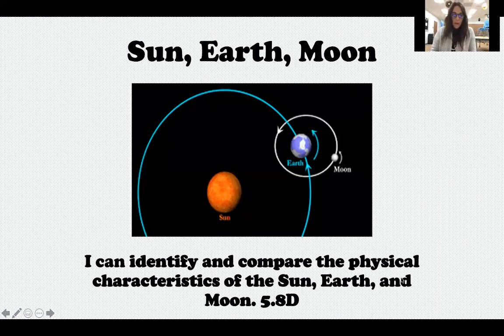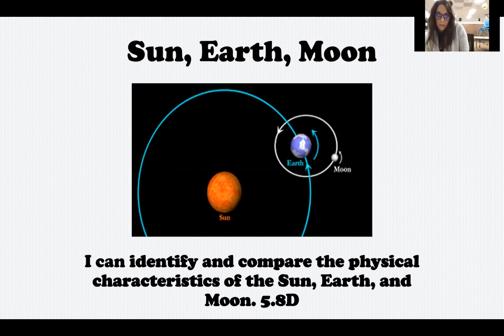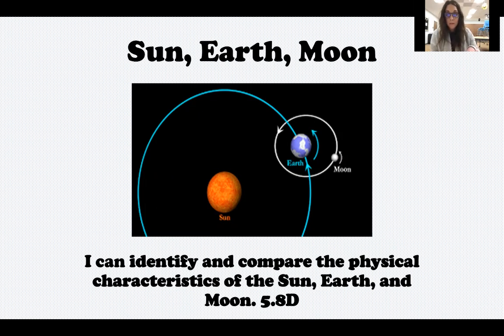Hey fifth grade, it's Mrs. Seals back for our next science lab. We finished up our unit on changes to the earth's surface and we're moving on. Our next unit is all about the sun, earth, and moon. We're going to start out by identifying and comparing the physical characteristics of the sun, earth, and moon — how they are different from each other and also some things they may have in common. So let's get started.